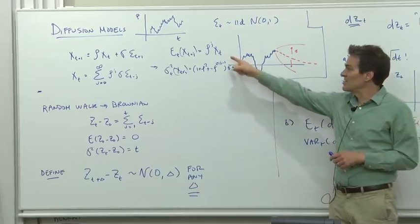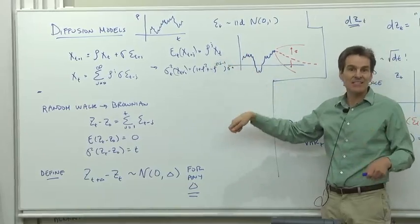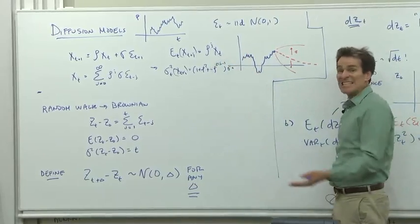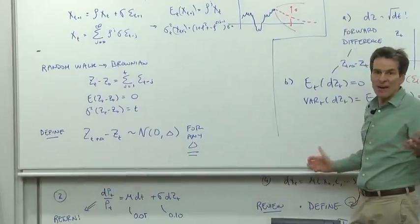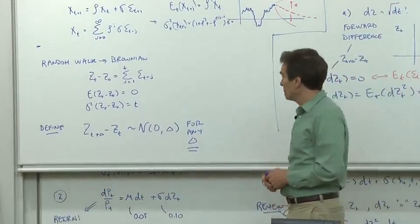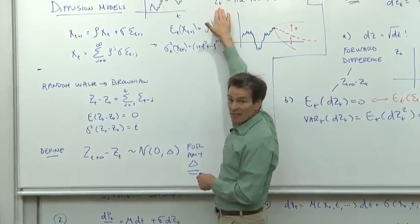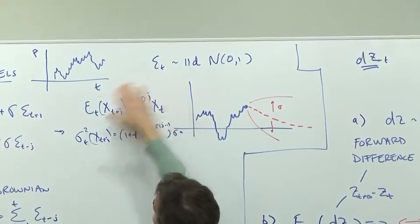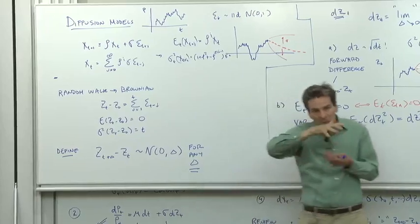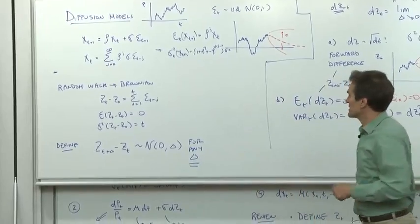Our job is to do exactly like that in continuous time. The ideas are all the same. We just have to write down a little math and think about it. Step one, we've got to find the building block, the thing that's the analog to the epsilon. Step two, how do we take that building block and construct more interesting series out of it?